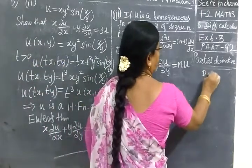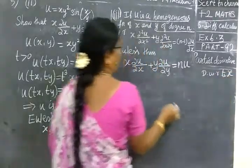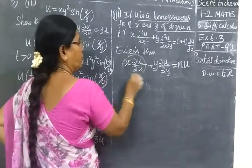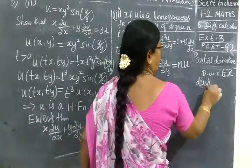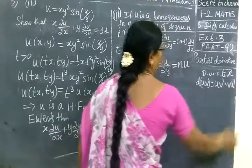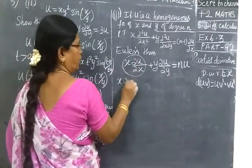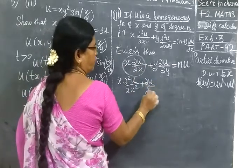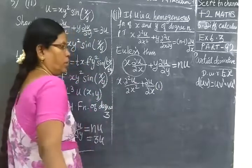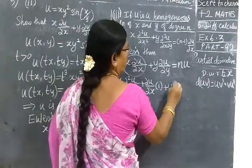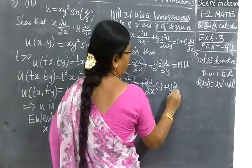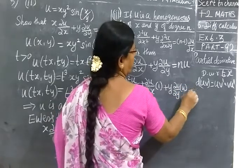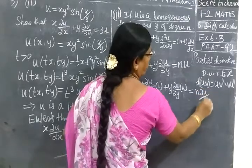Now, we differentiate with respect to x. Euler's theorem, x is there. This is the proof. We differentiate with respect to x. This is the uv method. d of uv equal to uv dash plus v u dash. First function into differentiation of second function. Differentiate with respect to x: dou square u by dou x square plus second, y into dou by dou y of u equal to n into u differentiated: dou u by dou x.